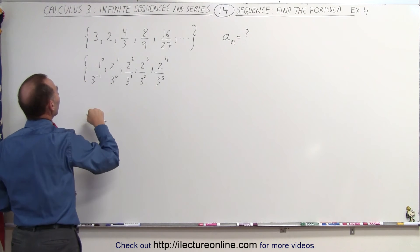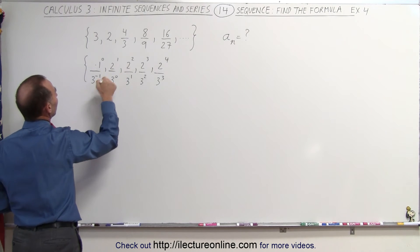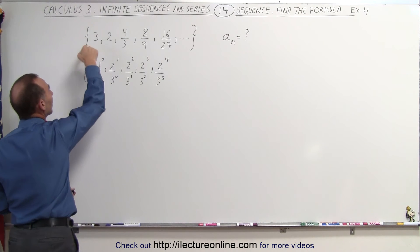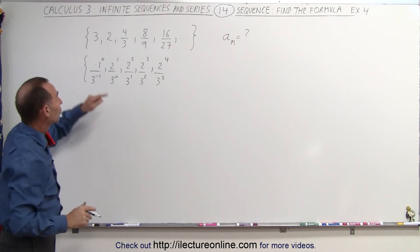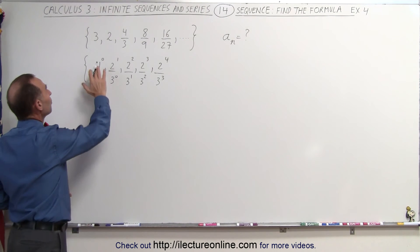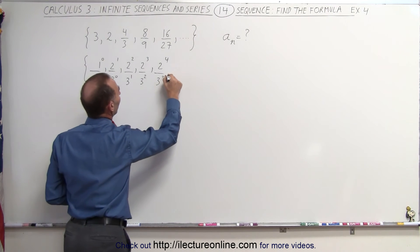Because having a 3 to the negative 1 power in the denominator gives me a 3 to the first power in the numerator, and that gives me the 3 up there. So it looks now that I've found the pattern in both the numerator and the denominator.